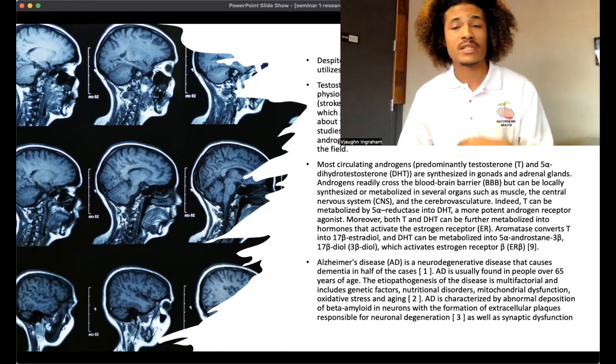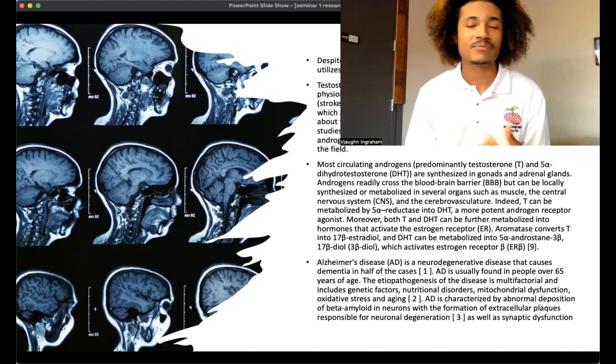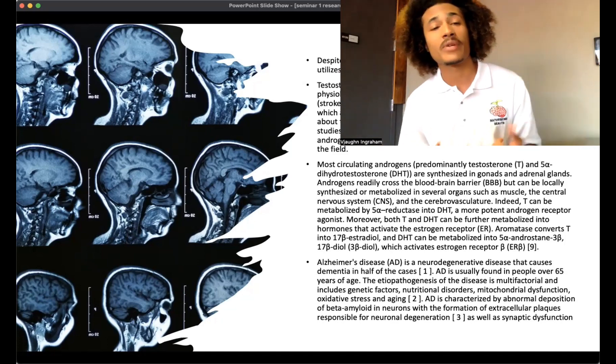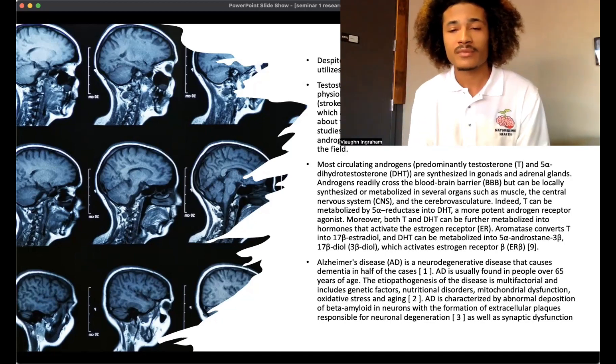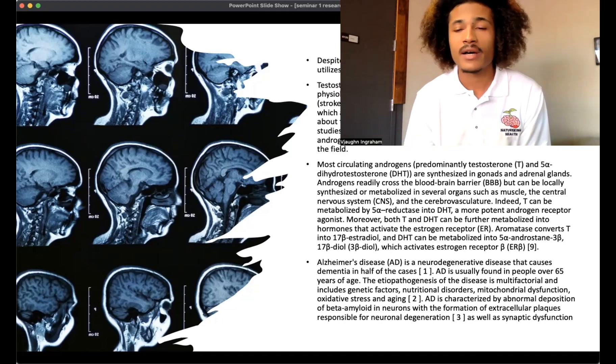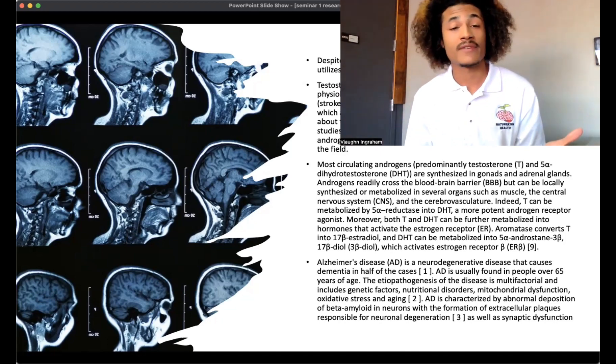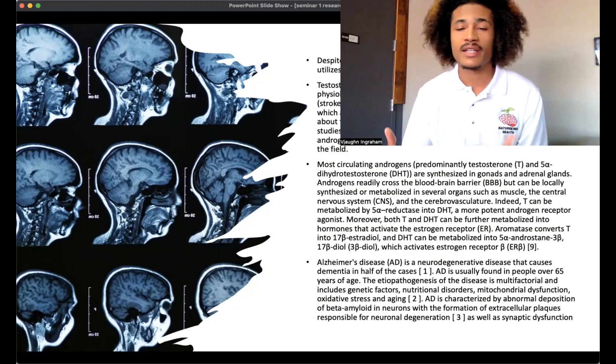The temporal lower region is usually where you have the region associated with memory, navigation, emotions, a little bit of learning, and also a little bit of comprehension, speech, sound processing, and so forth. AD is found in people usually over 65 years of age, so usually older people report these cases, and that makes sense.